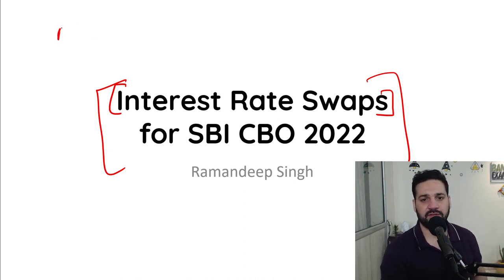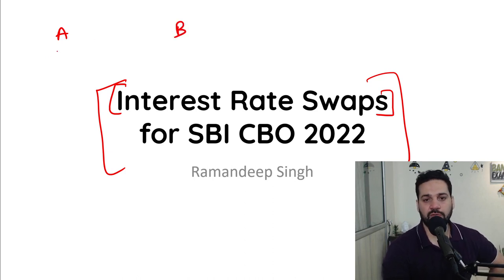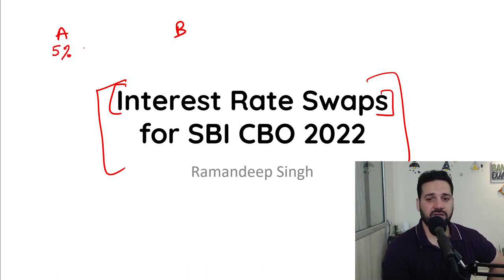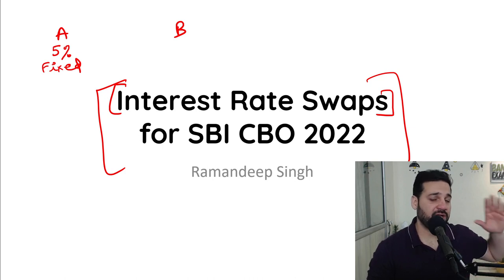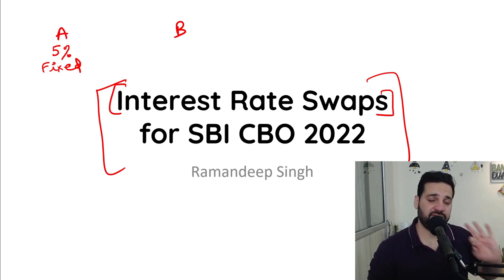There is a Company A and Company B. Company A took a loan at the rate of 5% on fixed interest. This interest is fixed no matter what — no matter if the interest rate rises or falls in the future, the interest rate would remain the same at 5%.